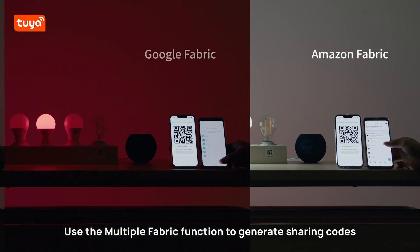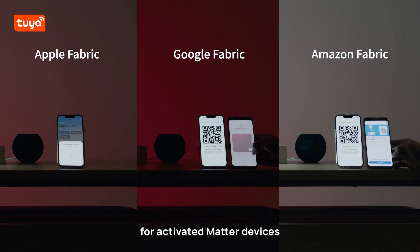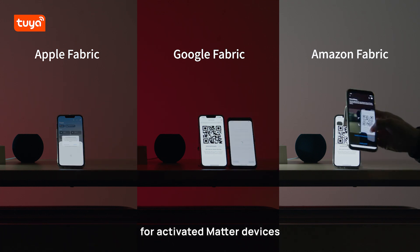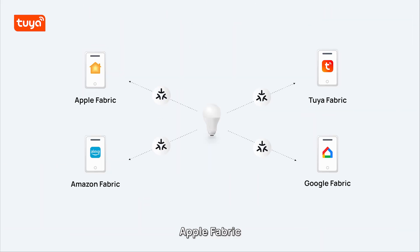Use the multiple fabric function to generate sharing codes for activated Matter devices and share them with different apps to form different fabrics: Apple fabric, Google fabric, and Amazon fabric.